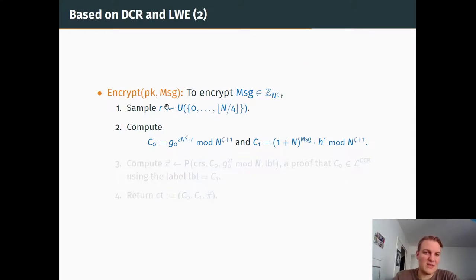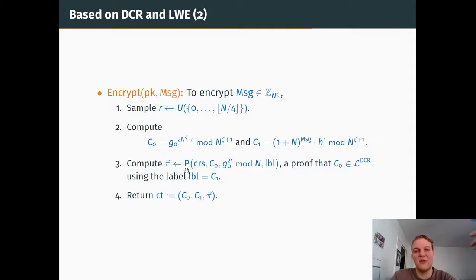To encrypt, one can simply sample small r, compute g_0 to the 2N^zeta * r mod n to the zeta plus one, and use the message in the second part of the ciphertext. For the decryption, it's interesting to notice that c_0 to the 2x is actually h to the r, and then it can be removed from c_1, and we can recover the message. But first, we are encrypting. We compute a proof that we did the truthful encryption by proving that c_0 is indeed an n^zeta residue mod n^{zeta+1}, and we return the ciphertext and the proof.